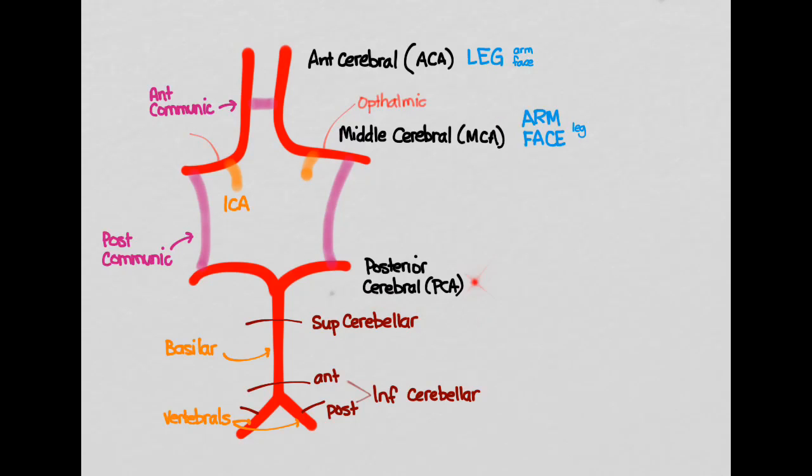Now, the posterior cerebral goes mainly to the occipital lobe and the medial temporal lobe. So you're going to have some problems with hearing, balance, vision, that sort of thing. And we already talked about what happens when you take out the cerebellar arteries. You get the nausea, vomiting, ataxia, and vertigo.